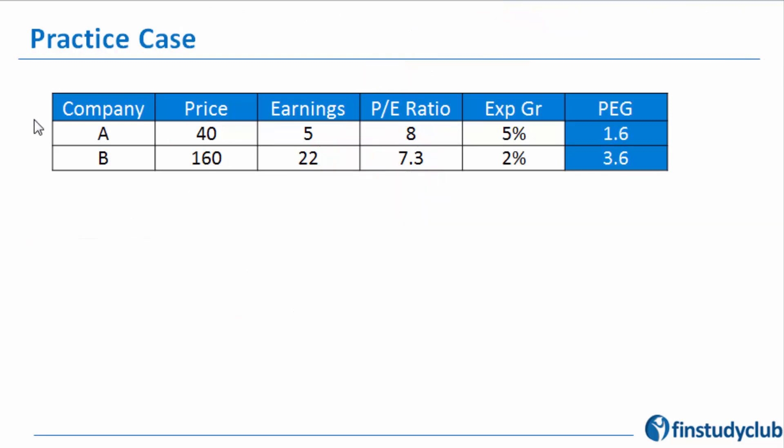What I did is I took the expected growth out of the formula and put it here. Then I realized that in the valuation of A, I'm taking a 5% growth, and in the valuation of B, I'm taking only 2% growth.